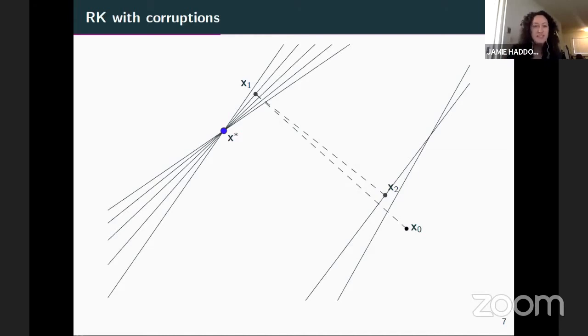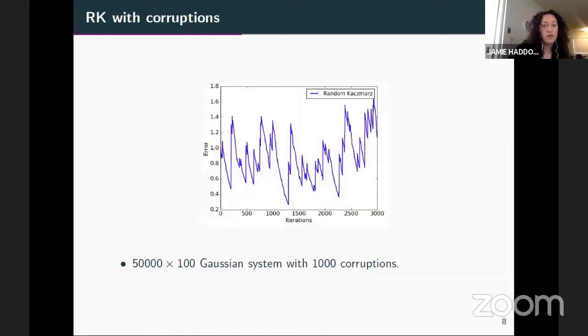And so here the expected error, the expected squared error is decreasing as a geometric sequence with this nice convergence constant, which depends upon the scaled condition number of your matrix A. Okay. However, like I said, unfortunately, this approach is for consistent systems of equations. And so it doesn't handle the corruptions. In fact, the corruptions are devastating to the behavior of this algorithm. So here's a little simple example in which you see that just the single step, which selects one of the corrupted equations, you lose almost all of the progress that you've made in previous iterations, bringing you towards the solution.